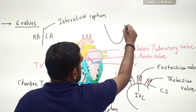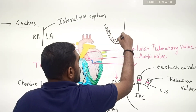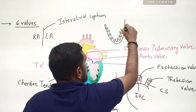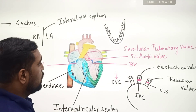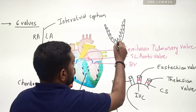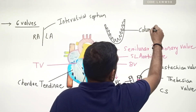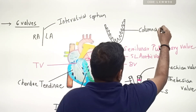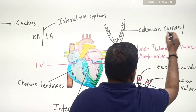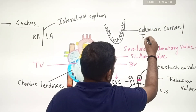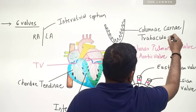Normally we draw a ventricle as a simple shape, but remember that the ventricles have folds. These folds are needed just to increase the surface area of the heart so that pumping becomes much easier. These folds are called columnae carnae, and they also have another name — trabeculae carnae.